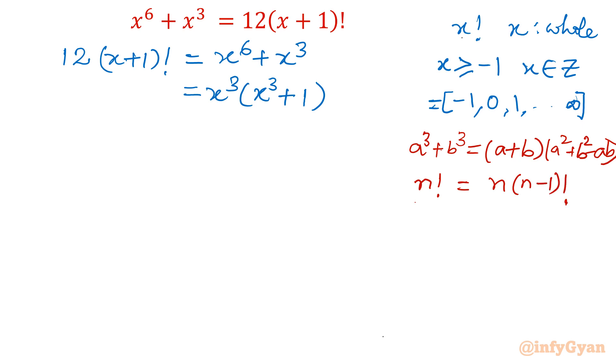So let's consider our equation. This equation will convert into 12 times x plus 1 times x times x minus 1 factorial, using recursive formula. Right hand side, we have x cube in bracket x plus 1, x square minus x plus 1.